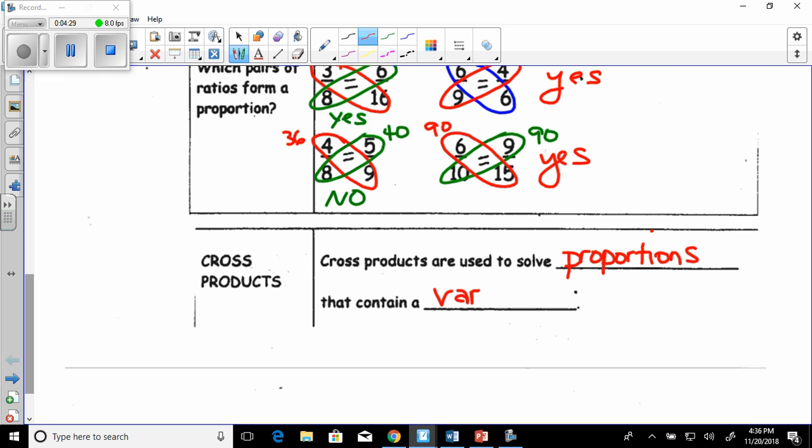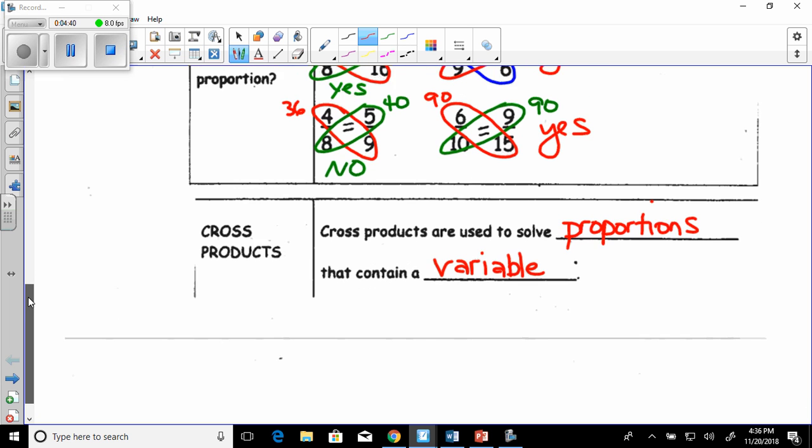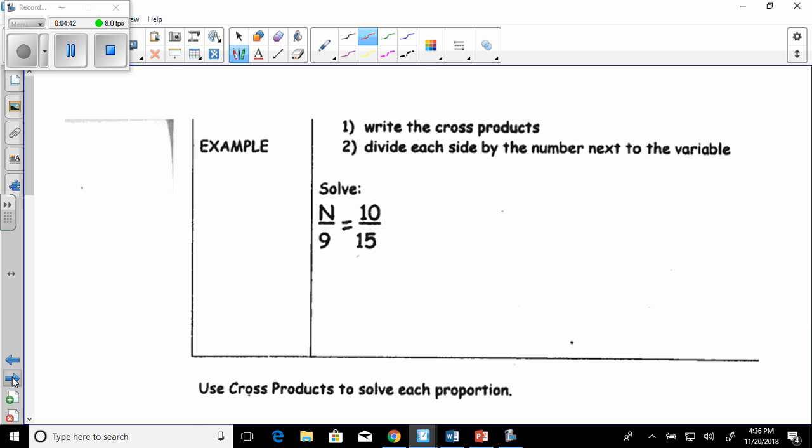Now this is where we're going to get into algebra. And I know that a lot of you are going to want to do it in your head and not do it the proper way. But I'm going to show you both ways because that will be important once we get into algebra. So in this case, what you want to do is you're going to write the cross products. The correct way would always be to start with the variable cross products. And you would write 15n.